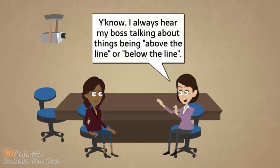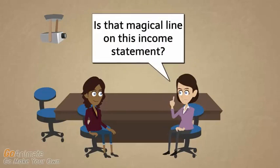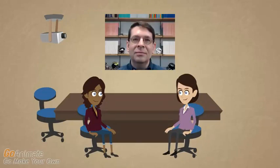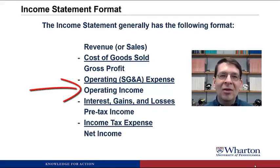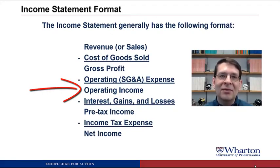I always hear my boss talking about things being above the line or below the line. Is that a magical line on this income statement? Yes, that magical line is operating income. Most investors and analysts use operating income as a key measure of the performance of the core business. So if a company has some kind of unusual expense, managers will look for ways to move it below the operating income line so that the performance of the core business looks better. Managers spend a lot of time worrying about whether unusual gains or expenses will appear above or below this magical operating income line.